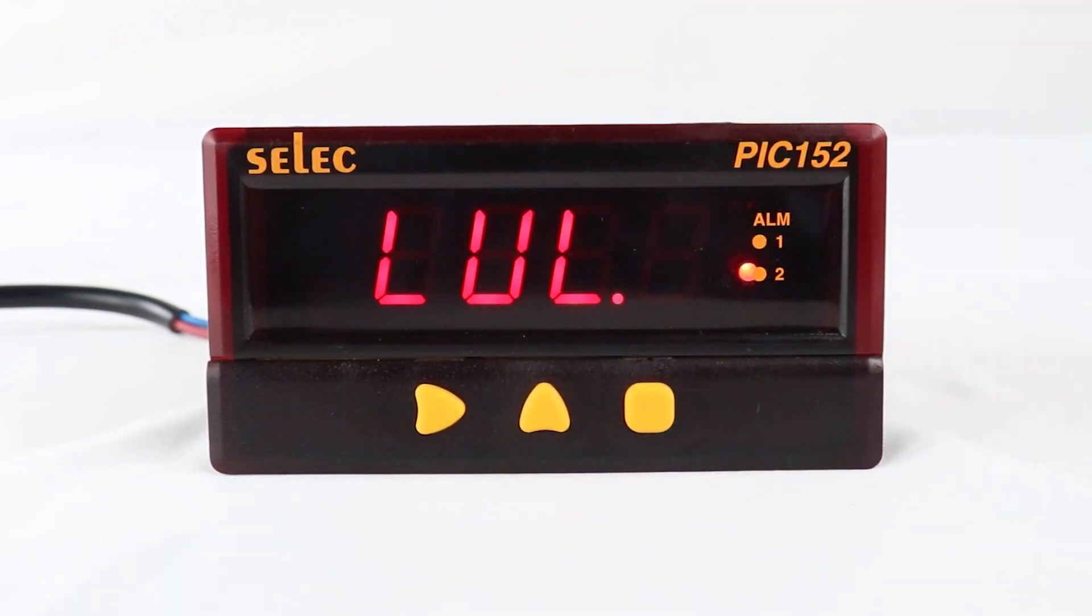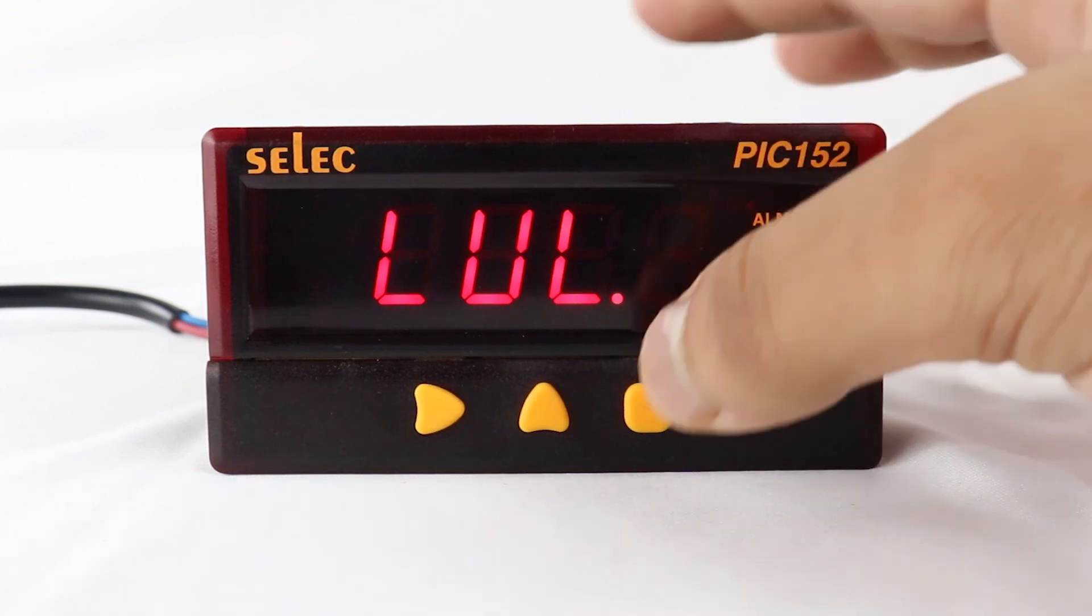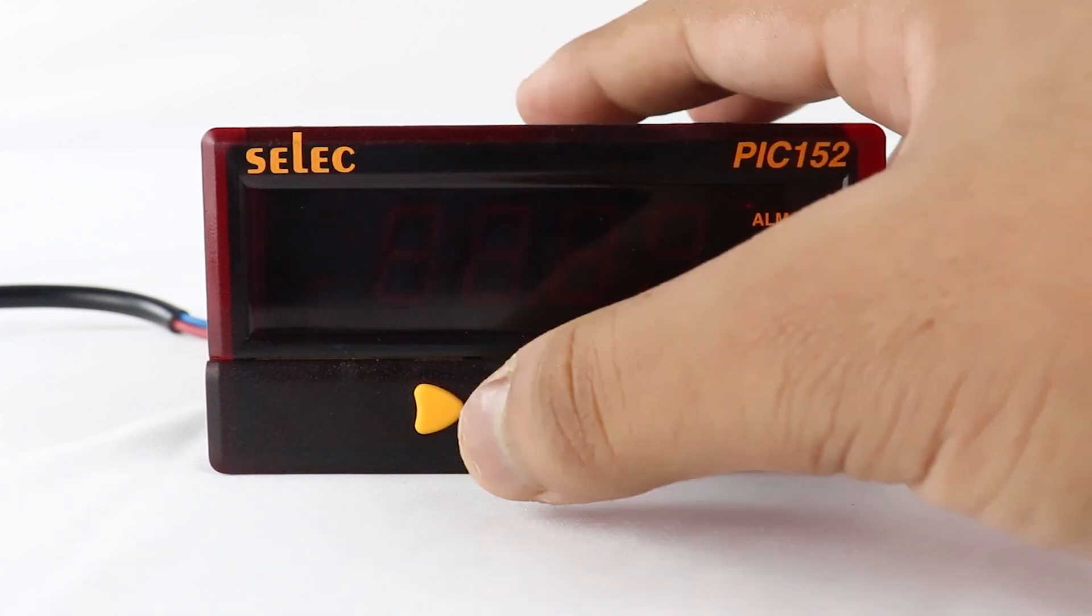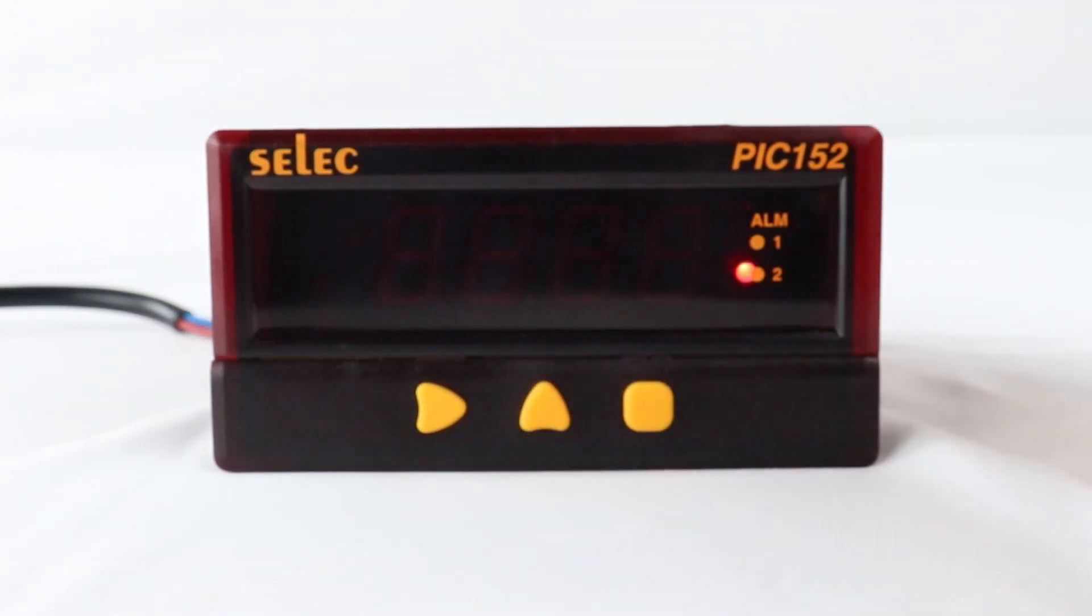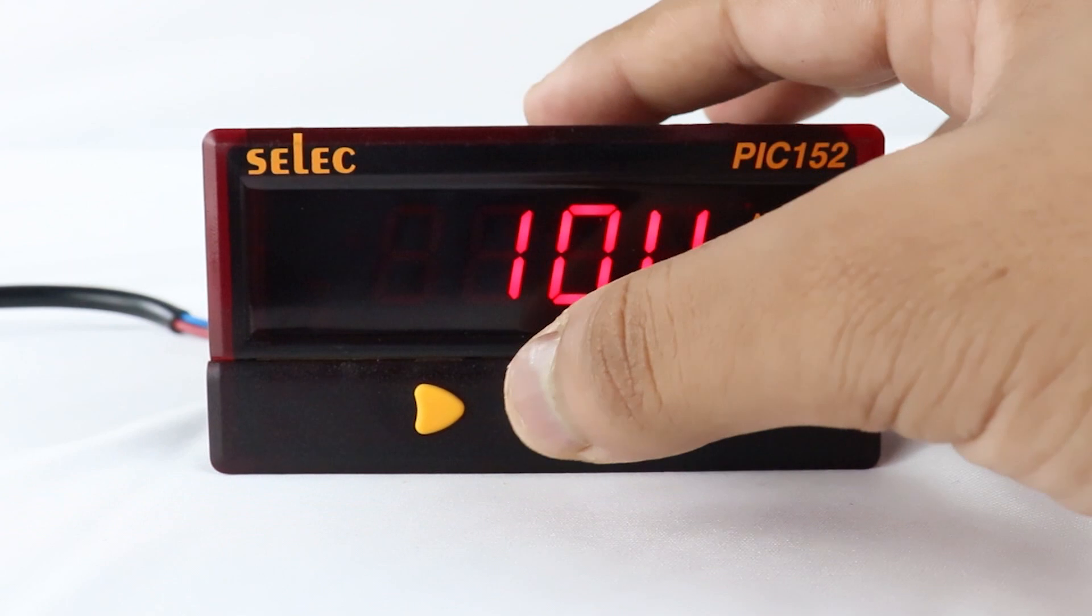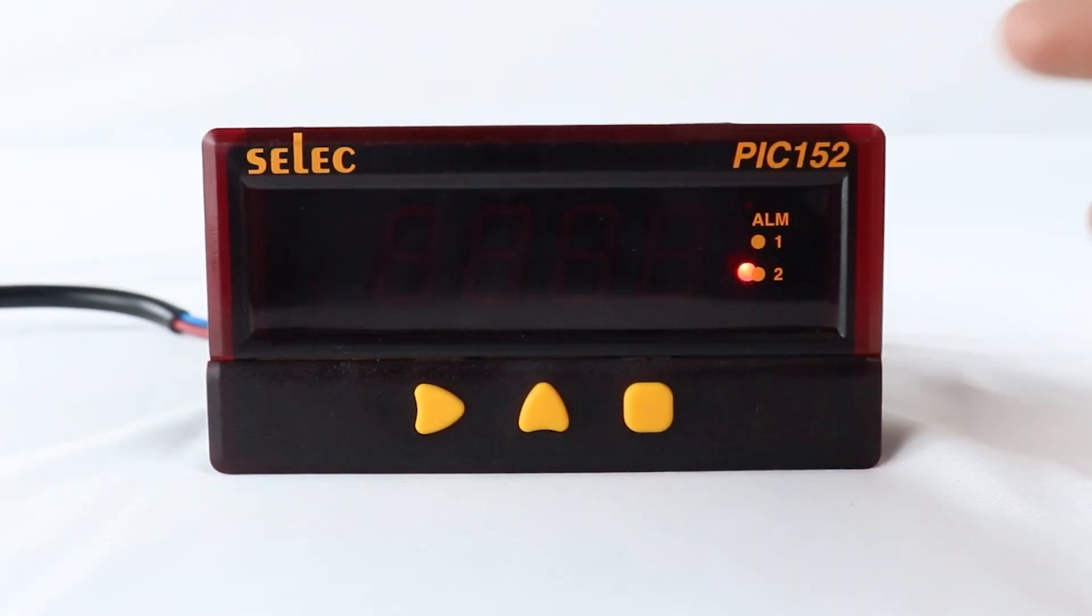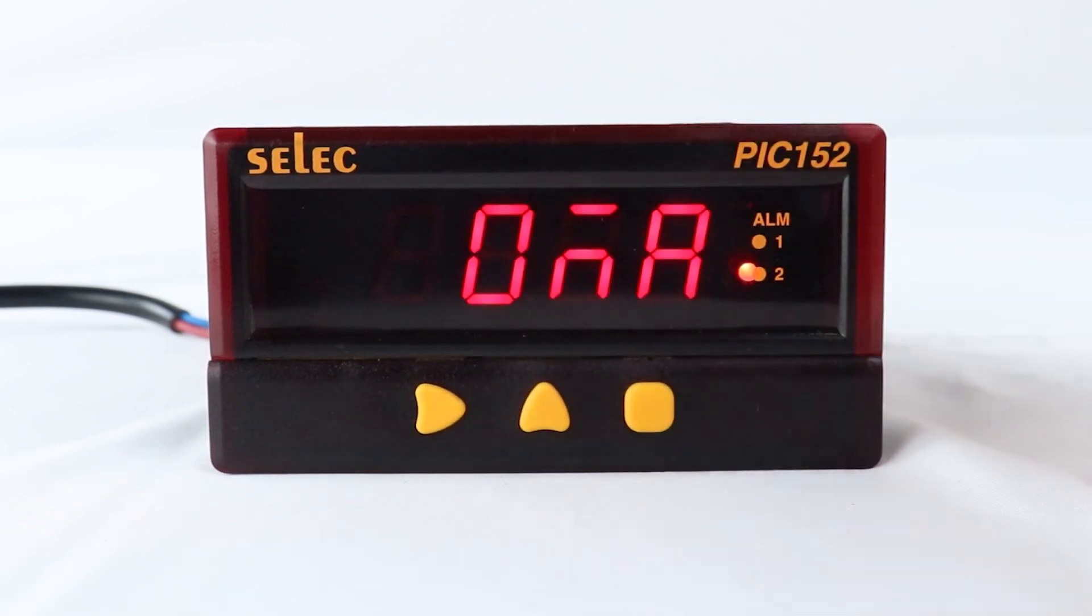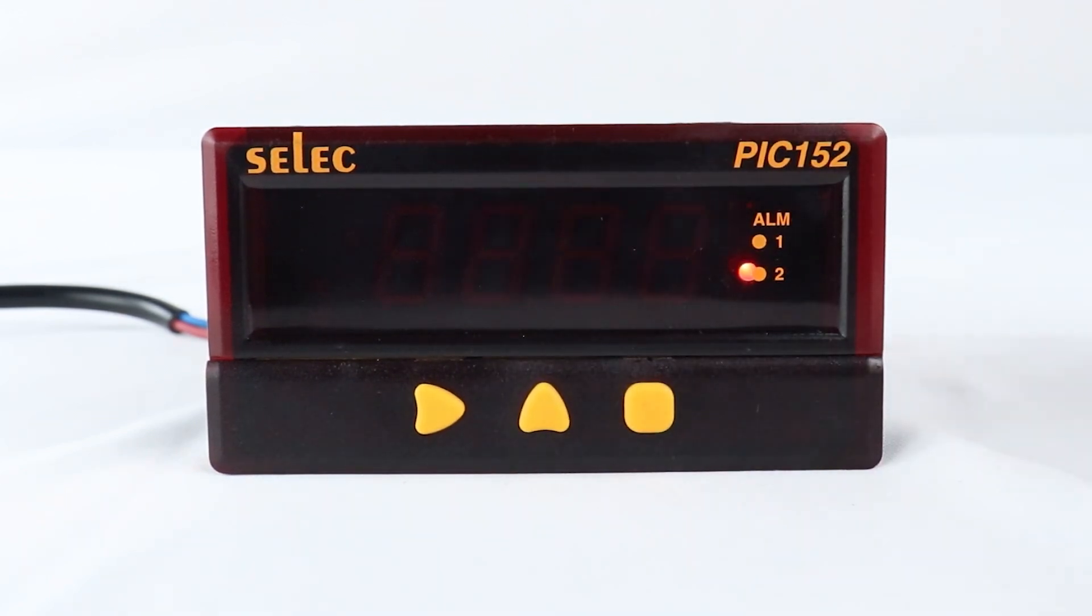Level 3 is for analog output selection. Press square key to select analog output type, which can be selected as 4 to 20 milliamps, 0 to 10 volt, 0 to 5 volt, 0 to 20 milliamps, by pressing up arrow key.